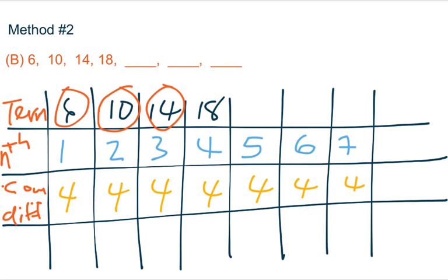So four times one plus two will give us six. Four times two, eight plus two will give us ten. So here, four times five will give us twenty, plus two will give us twenty-two.